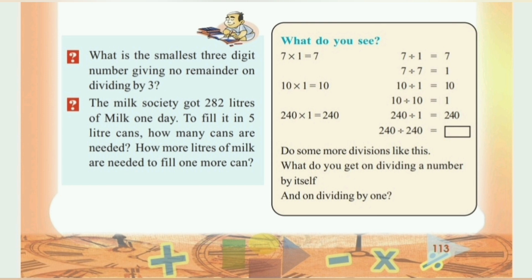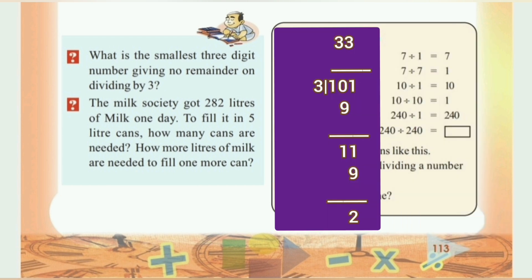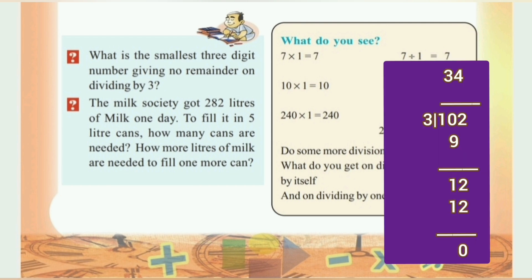What is the smallest 3-digit number giving no remainder on dividing by 3? The smallest 3-digit number is 100. 100 divided by 3: 3 into 9 is 9, 10 minus 9 is 1, remainder is 1. Next, 101 divided by 3: remainder is also not 0. That gives us 102.